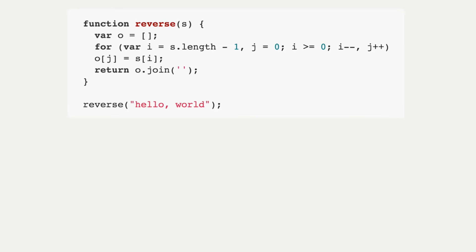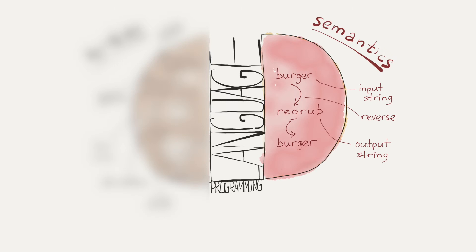What's the meaning of this code? Maybe you guessed it, it prints a phrase backwards. The meaning, the end result of running code, is the semantics.